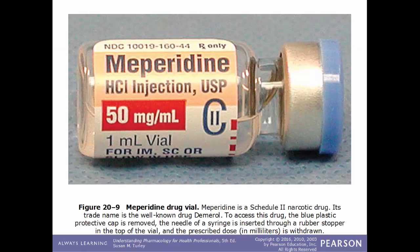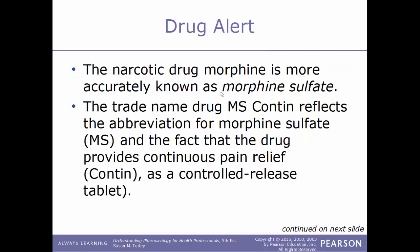This image shows an example of meperidine, more commonly known by the name Demerol. You can tell by the label — the capital letter C and the Roman numeral 2 — that it is a Schedule 2 drug, indicating a very high potential for addiction.